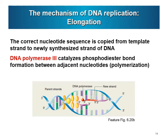The correct nucleotide sequence is then copied from the template strand to the newly synthesized DNA strand. DNA polymerase III catalyzes phosphodiester bond formation between adjacent nucleotides, as discussed previously. This is the process of elongation.